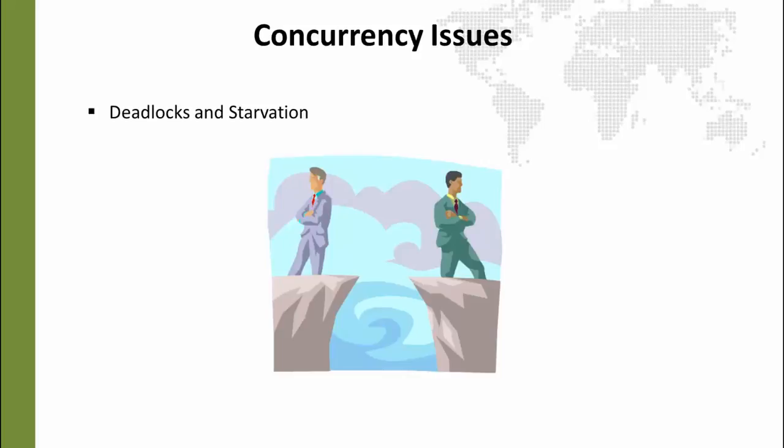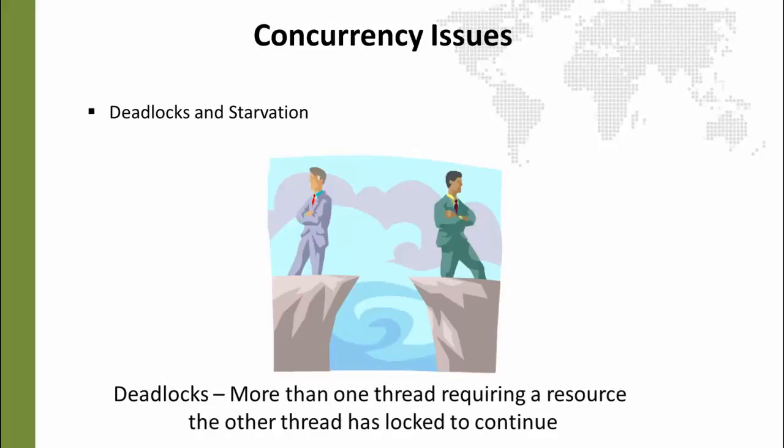This leads us into a deadlock situation. If we have told thread B to wait until thread A is done, but thread B is holding something that thread A needs in order to finish, then thread A will never finish, and thread B will never finish. They are both stuck — that's a deadlock.